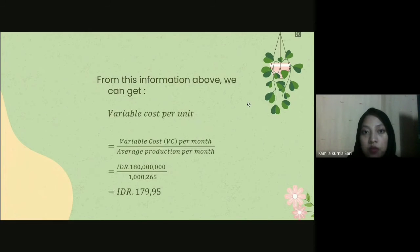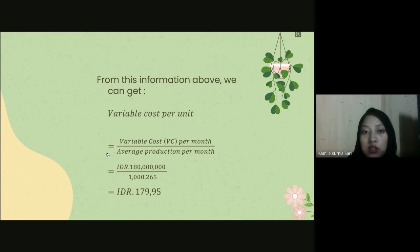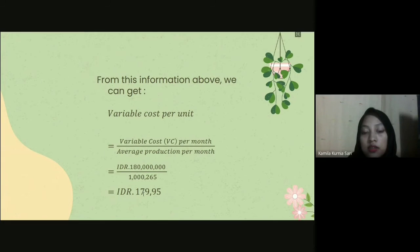From the previous data, we calculate the variable cost per unit, which equals variable cost per month divided by average production per month. From this calculation, the variable cost per unit is equal to 179.95 rupiah.